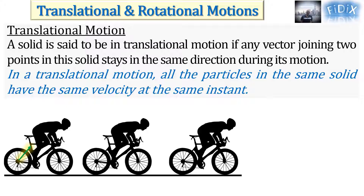For example, in the figure a green vector is drawn in such a way as to overlap one of the seat stays of the bike. When the bike moves, the green vector stays in the same direction during its motion. The motion of the solid, which in this case we define as the bike without its wheels, is an example of what we call rectilinear translational motion.